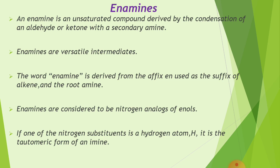The word 'enamine' is derived from the affix 'en' used as the suffix of alkyne, and the root 'amine'. The 'en' comes from alkyne, meaning double bond, and 'amine' is the root. Enamines are considered to be nitrogen analogues of enols. If one of the nitrogen substituents is a hydrogen atom, it is the tautomeric form.